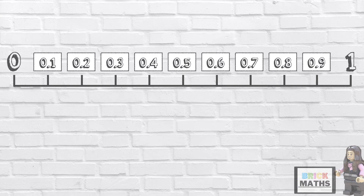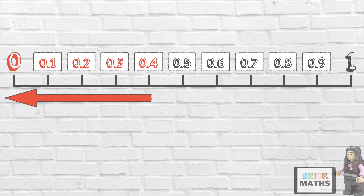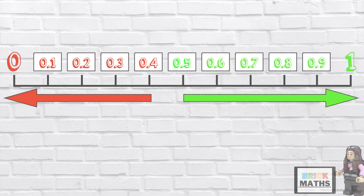But how do you know whether to round a number up or down? If the number ends in 1, 2, 3 or 4, you round the number down to the previous whole number. If the number ends in 5, 6, 7, 8 or 9, you round the number up to the next whole number.